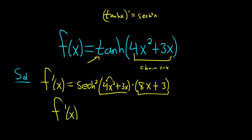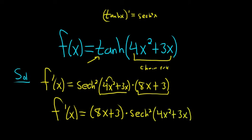The final answer is already written down, but maybe we can put this in the front. So it would be 8x plus 3 times hyperbolic secant squared of 4x squared plus 3x. And that's it.